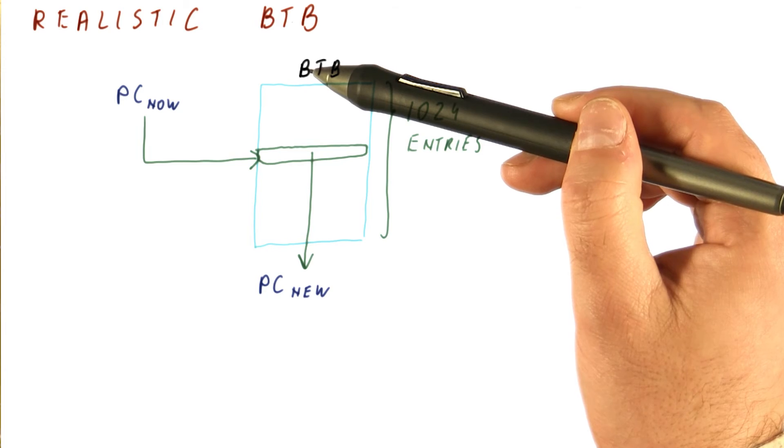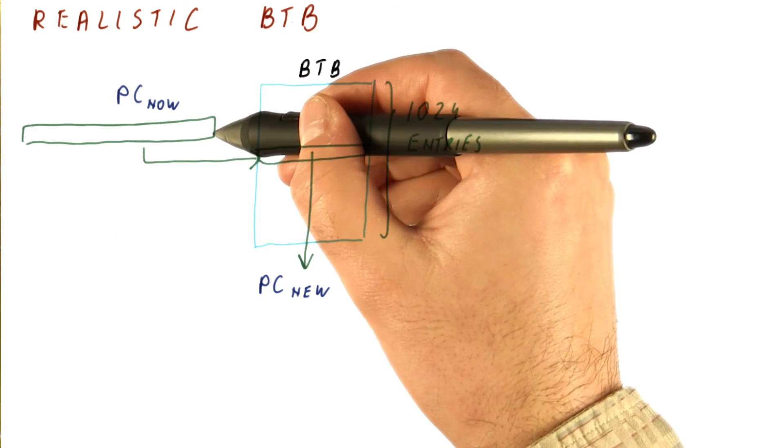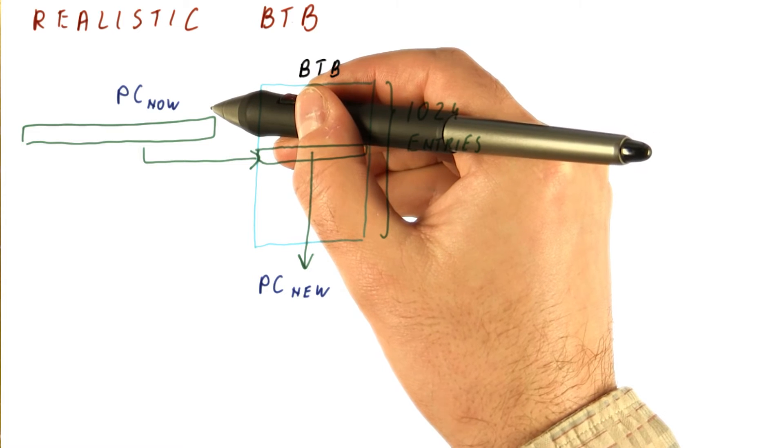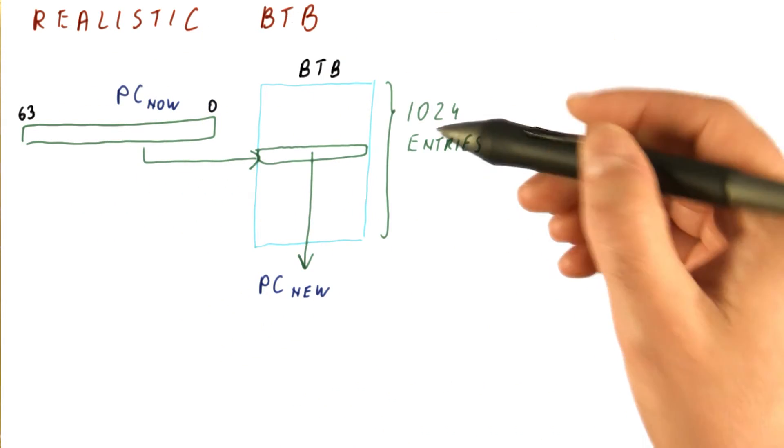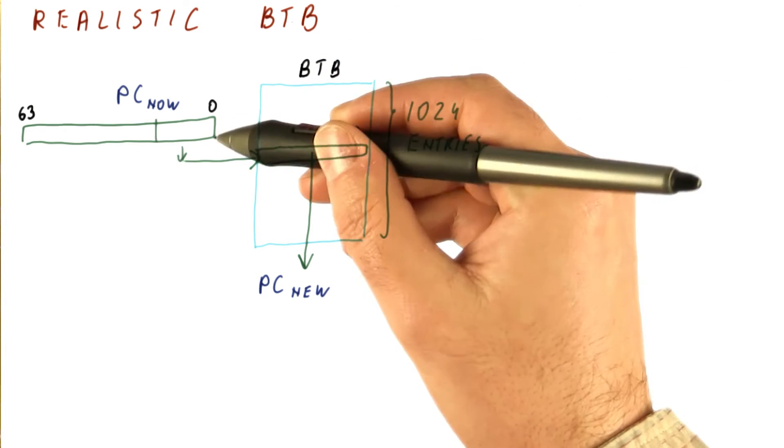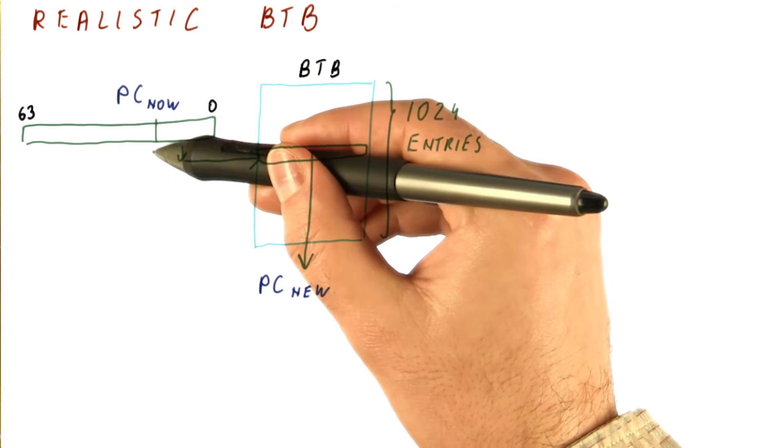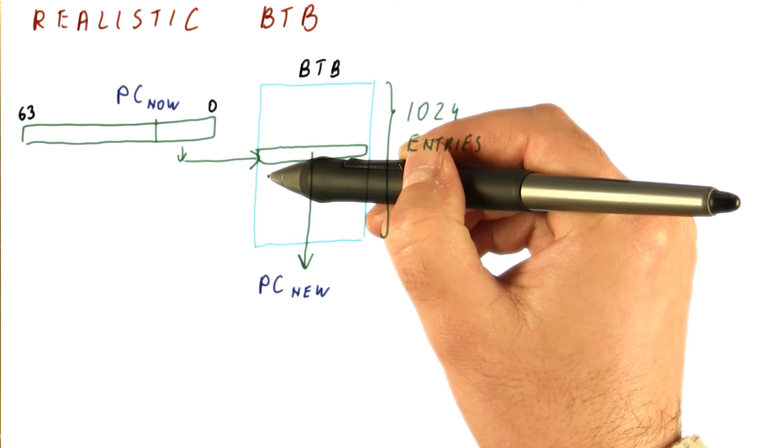The way we do this is the program counter from which we are fetching is, let's say, a 64-bit value. So it has bits starting from 0 to 63. We need 10 bits to index into our B2B. So what we will do is we will take the least significant 10 bits and use that as the index into our B2B.